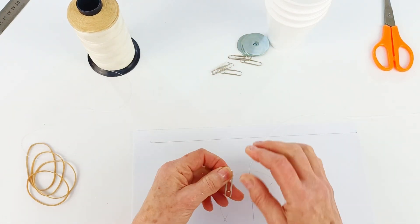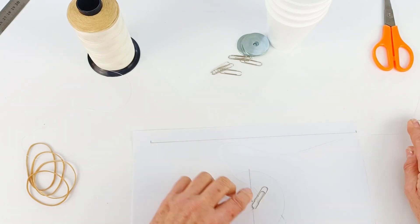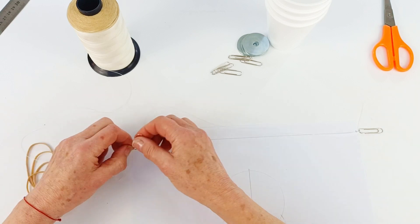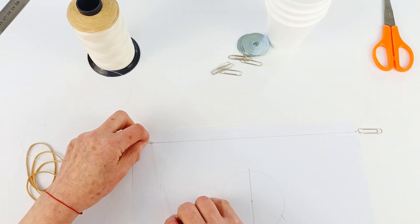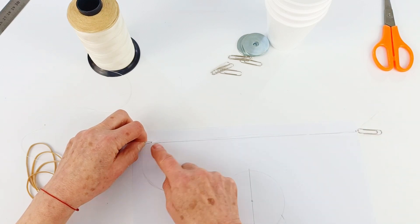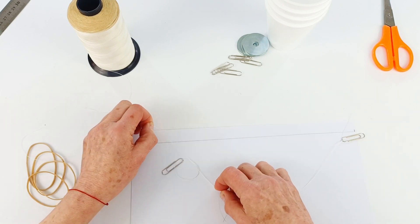So we're just going to loop our paper clip on there and then we're going to get our measurement to make sure that we're accurate. Now you could also just do this with a ruler if that's easier for you. Sometimes in a classroom it can be easier just to use a ruler but you can also just use a piece of paper like we've done here. So we want 27 centimeters from one paper clip to the other and then we're just going to tie that off as well.